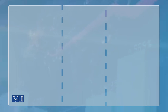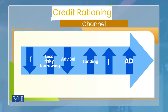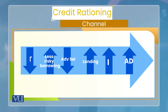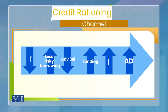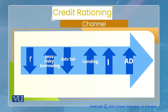Toh hum dekhte hain ki monetary policy ka yahaan kya role ho sakta hai, aur uska transmission channel credit rationing ke andar kaise work karta hai. Monetary policy ne apna instrument change kiya — real interest rate kam ho gaya. Jab real interest rate kam hota hai, toh high interest rate par zyada risk ki borrowing ho rahi hoti hai — risky farms ki tendency zyada hoti hai high interest rate par loan lene ki. Toh jab market mein real interest rate kam ho gaya, toh less risky projects wali firms bhi ab borrow karna shuru ho jayengi. Iska matlab hai less risky borrowing increase hoti hai, adverse selection ka problem kam hota hai, overall lending increase hoti hai, investment increase hoti hai, aur ultimately aggregate demand increase ho jati hai. Yeh channel risky versus less risky borrowing — ya risky projects versus less risky projects mein investment — ke through work kerta hai.